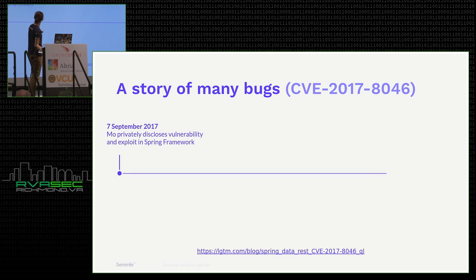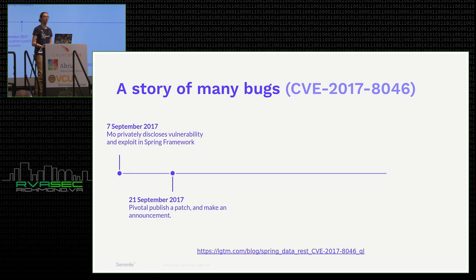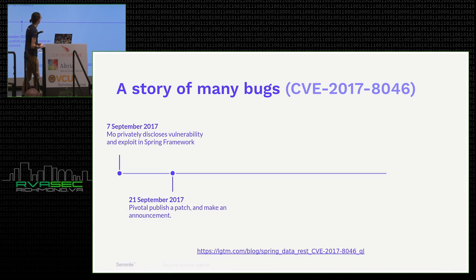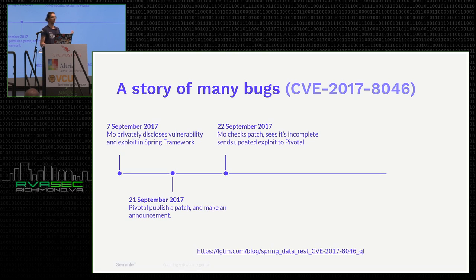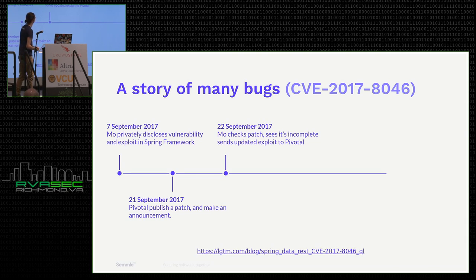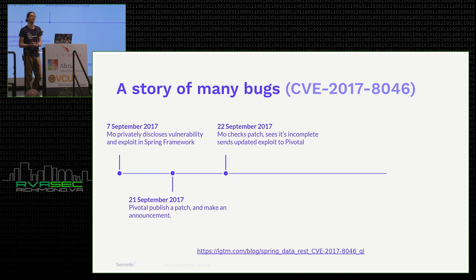Mo reported the vulnerability to Pivotal, and on the 21st of September, Pivotal released a patch and got a CVE allocated for it and made an announcement. The day after that, my colleague took a look at the patch, realized it wasn't really a patch, didn't really fix the vulnerability, and updated his exploit to take a slightly different code path and still trigger the RCE, sending that information to Pivotal.